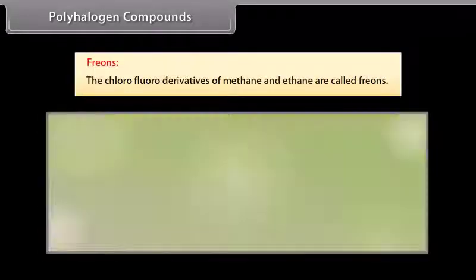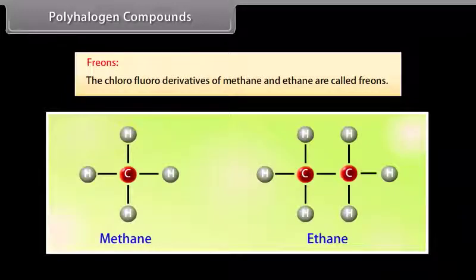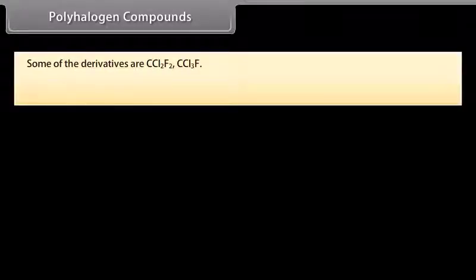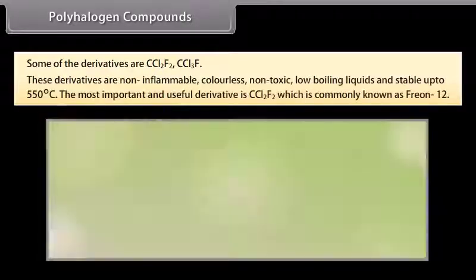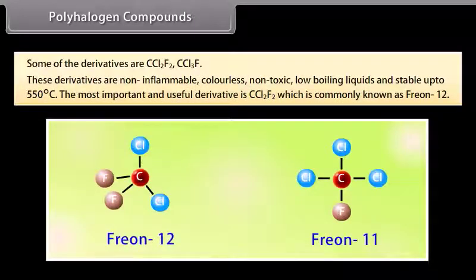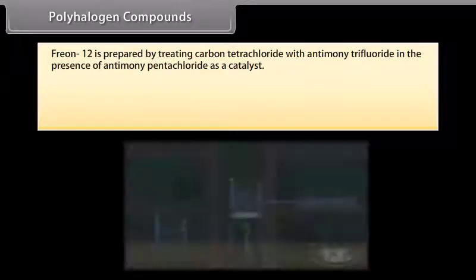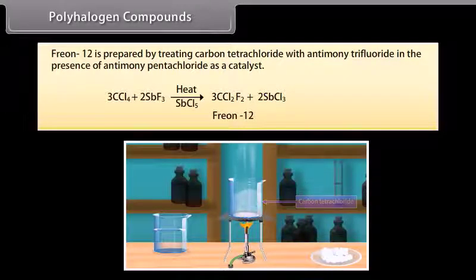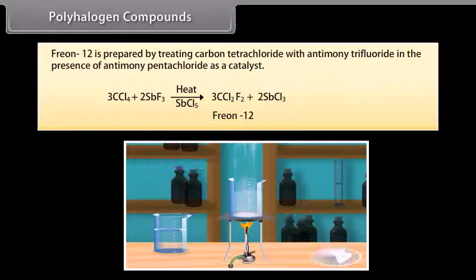Freons. The chlorofluoroderivatives of methane and ethane are called freons. Some of the derivatives are CCl2F2, CCl3F. These derivatives are non-inflammable, colorless, non-toxic, low-boiling liquids and stable up to 550 degrees Celsius. The most important and useful derivative is CCl2F2, which is commonly known as freon-12. Freon-12 is prepared by treating carbon tetrachloride with antimony trifluoride in the presence of antimony pentachloride as a catalyst.